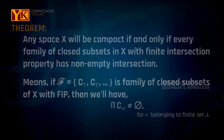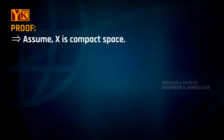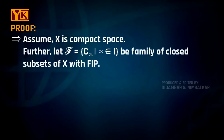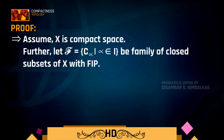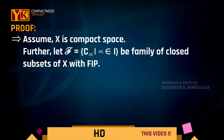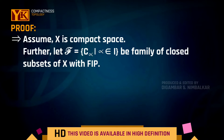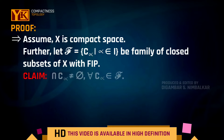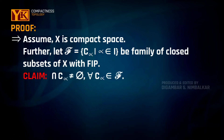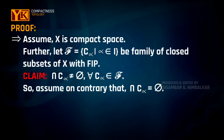To prove this theorem, assume that X is a compact space and let F equal the collection of C-alpha, where alpha belongs to an indexing set I, be a family of closed sets with the finite intersection property. Our claim is that the intersection of all members of F is non-empty. Assume on the contrary that the intersection is empty.